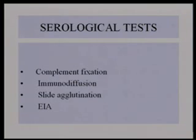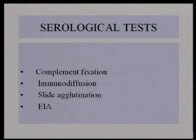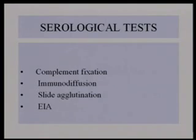We have four serological tests. Complement fixation — the problem is it cross-reacts with blastomycosis, histoplasma, and coccidioidomycosis. Whenever a physician requests fungal serology, you do all the complement fixation antigens for histo, blasto, and cocci. Immunodiffusion is good. Complement fixation is slow to come up. Immunodiffusion shows some bands in two to three weeks. Slide agglutination is a rapid test done in many hospitals in the Southwest. The EIA is still fairly new but looks good, and many hospitals now have EIA capacity.